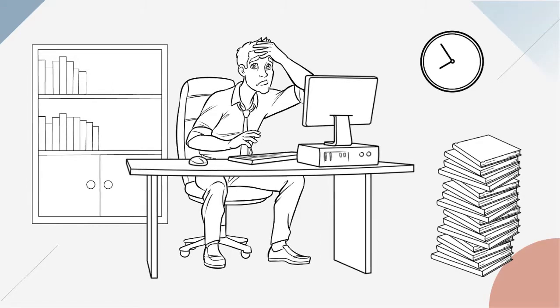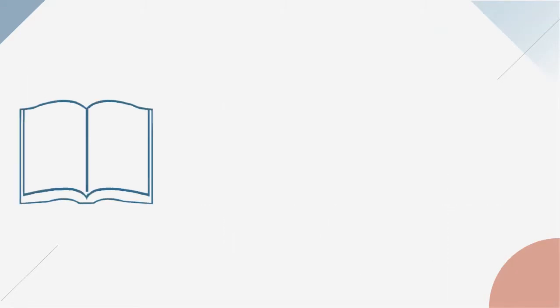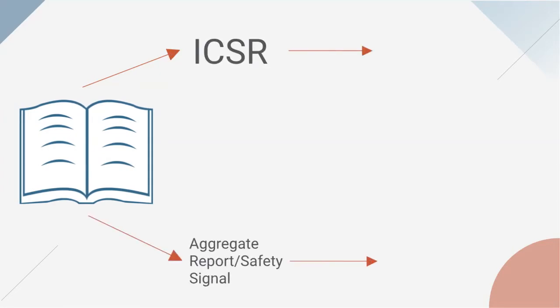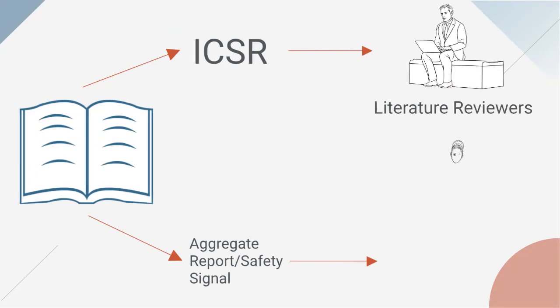Other companies create two work streams where the references are sent to both literature reviewers for ICSR assessment and to product safety specialists for aggregate reports and safety signals. Although this takes most of the time pressure away from the product safety specialists and does not waste their time making assessments for ICSR, it does mean that every reference is looked at twice, effectively doubling the effort and cost.